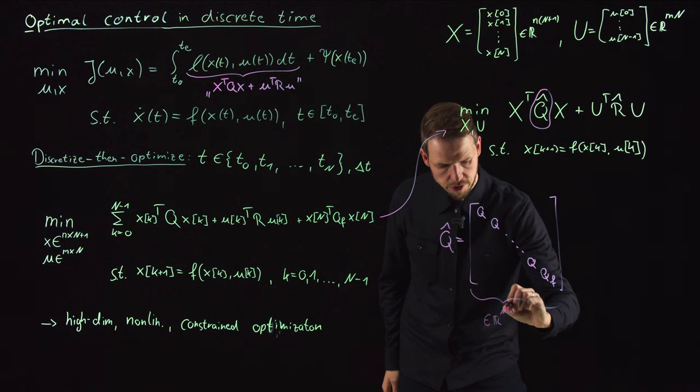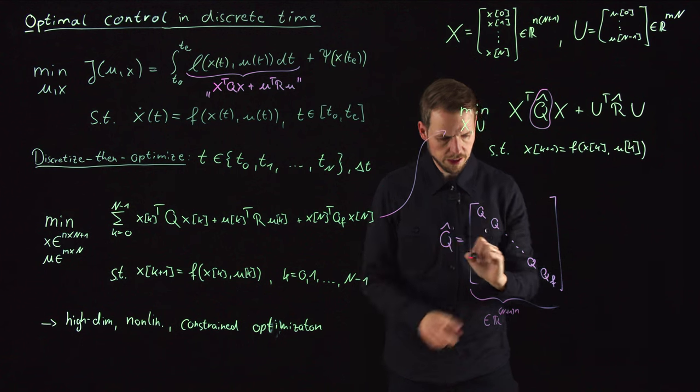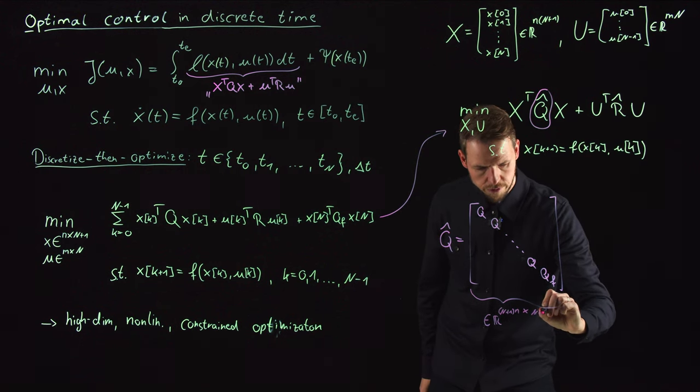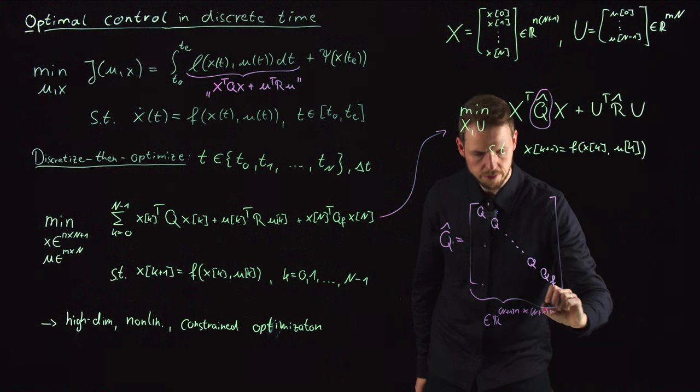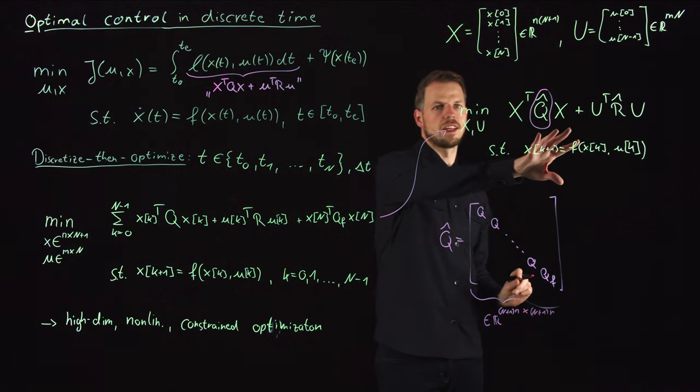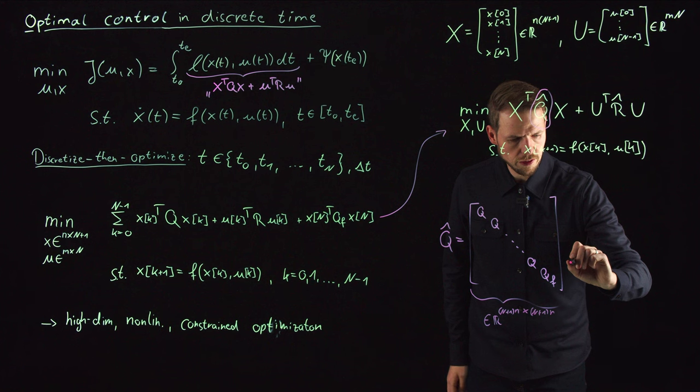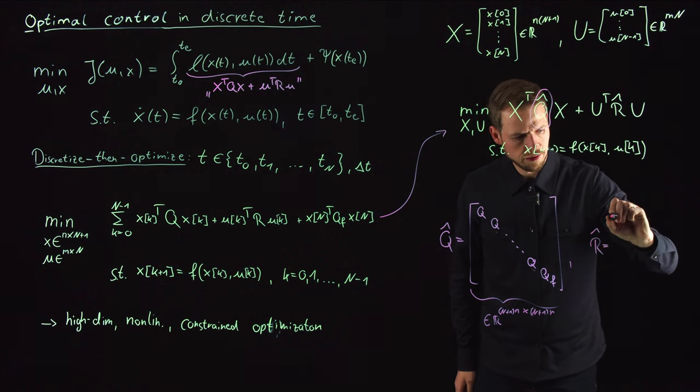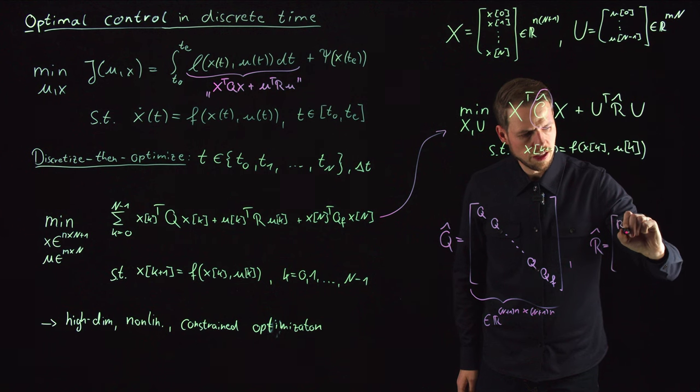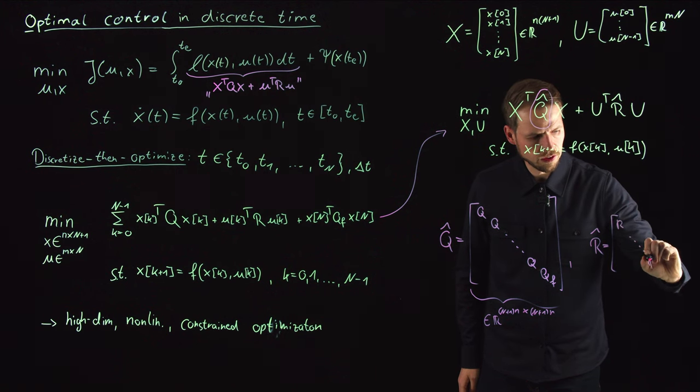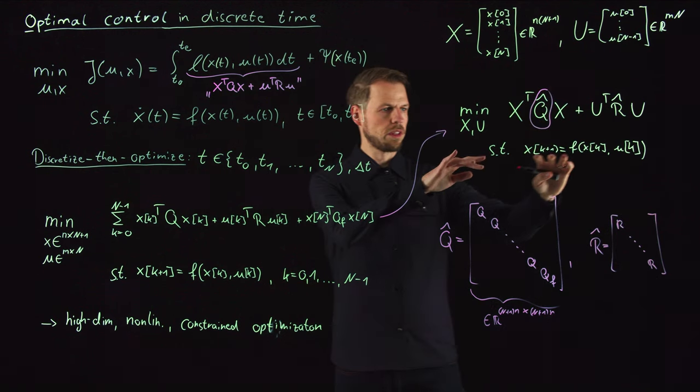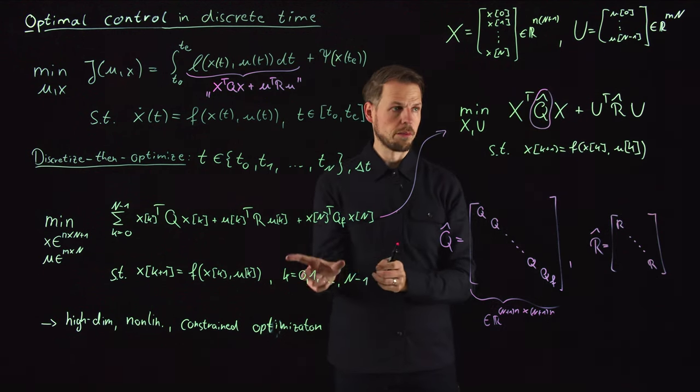I get the same structure for this R matrix, where I have R hat as again a matrix with all these R matrices on the diagonal, so this block-diagonal matrix. And so I'm still left with these n constraints as I had them here.